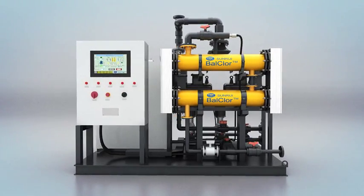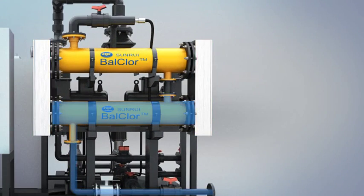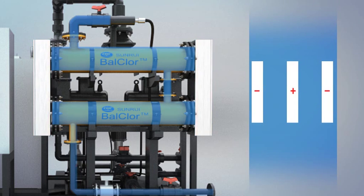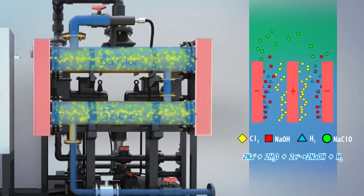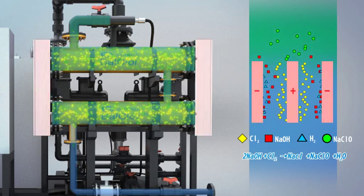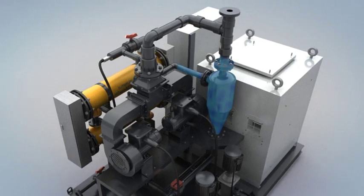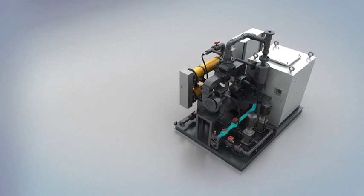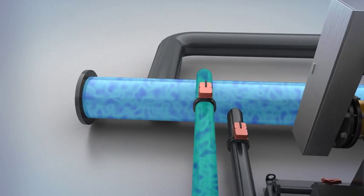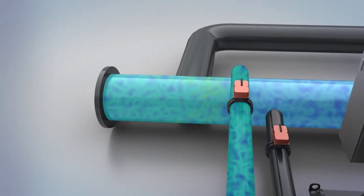During electrolyzing process, chlorine was created from electrolyzing seawater on the surface of anodes, which will be dissolved in water rapidly, forming high concentrated sodium hypochlorite solution and will be injected back into main ballast water pipe after degassing hydrogen during the reaction.